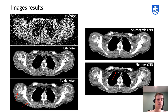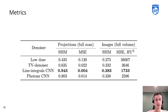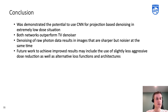Let's have a look at the results. Here are the projections denoised by our networks. The line integral CNN provides smooth projections, while the photon CNN tends to give sharper yet noisier projections. The same behavior remains in the image domain as well — the line integral CNN tends to over-smooth the image, while the photon CNN gives a pretty sharp image which contains some artifacts. The total variation denoiser underperforms in comparison to both CNNs.